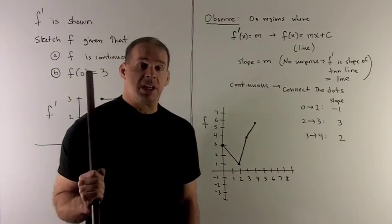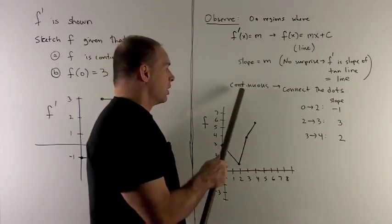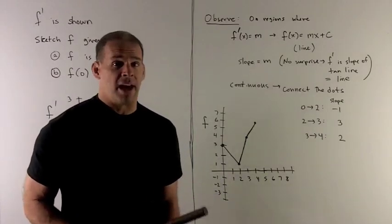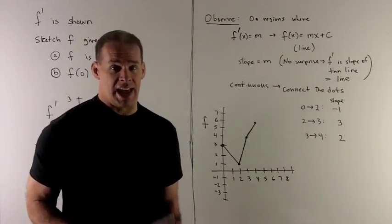The way we use the continuous condition, that's just going to tell us as we keep moving from one segment to the next, for the graph of f we're just keeping the dots connected.